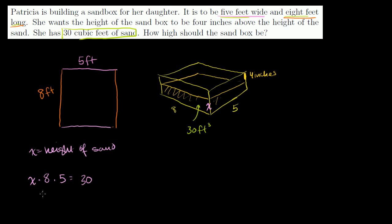So what is this? 8 times 5 is 40, so we get 40x is equal to 30. If we divide both sides of the equation by 40, let me do that, you divide both sides by 40, you get x is equal to 30 over 40, or it equals 3/4 of a foot.